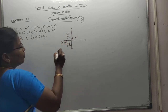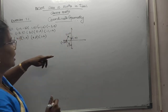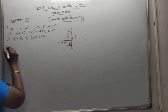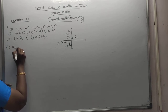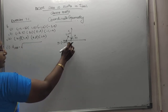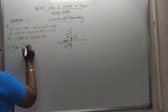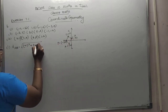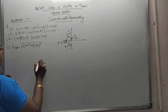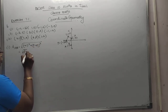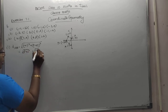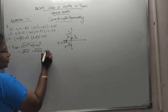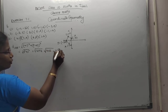Then your answer is easy. Understood? So therefore, the points are A, B, C, D. First one is distance of AB, which is equal to root of (x2 minus x1) whole square plus (y2 minus y1) whole square. x2 is 1 minus of minus 1, the whole square, plus 0 minus of minus 2, the whole square. That is equal to root of 2 squared plus 2 squared. Root of 4 plus 4, which is 4 into 2, equal to 2 root 2 units.